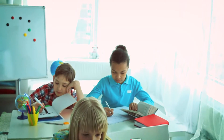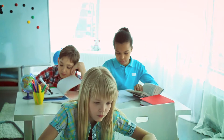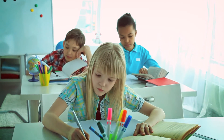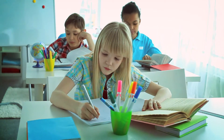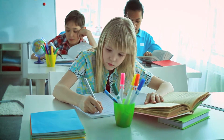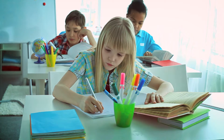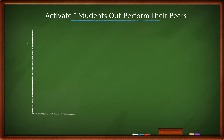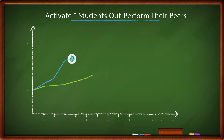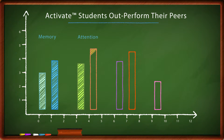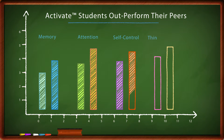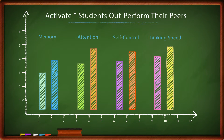The performance of kids using Activate vs. control groups of similar students who didn't get Activate training shows the difference that cognitive training can make. Our kids outperform their peers in reading and math because they've also increased their memory, their attention, their self-control, and their thinking speed.